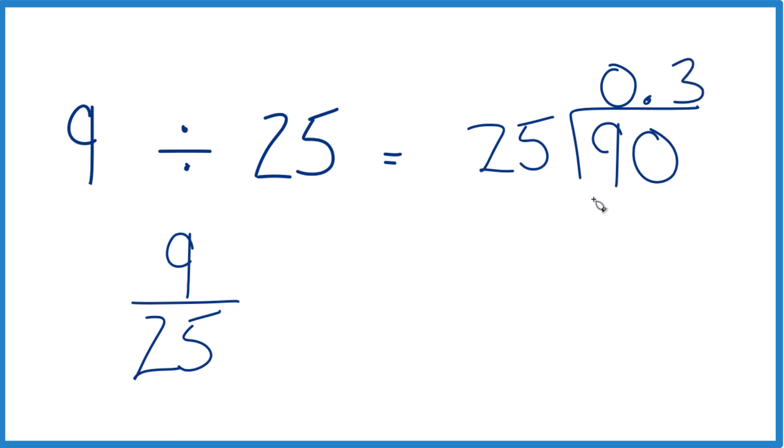3 times 25, that's 75, and then we subtract, we end up with 15.